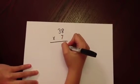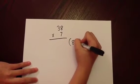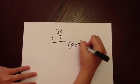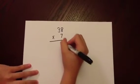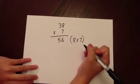We begin with the units column. So, 8 multiplied by 7. We put this sum in brackets to remind us of what we have multiplied already, and write the answer in the correct columns underneath. 8 times 7 is 56.